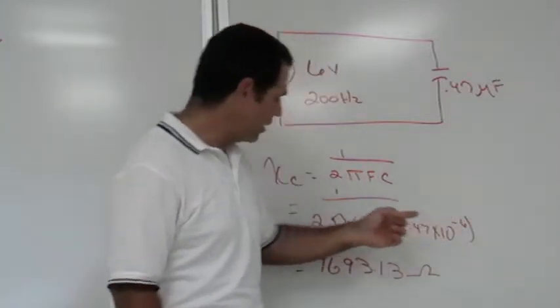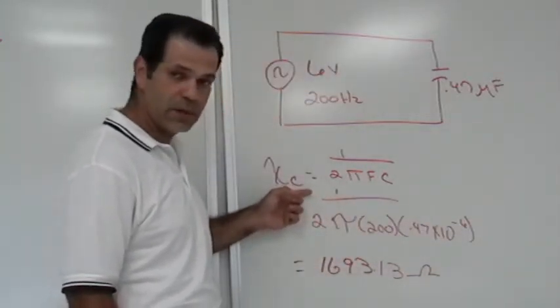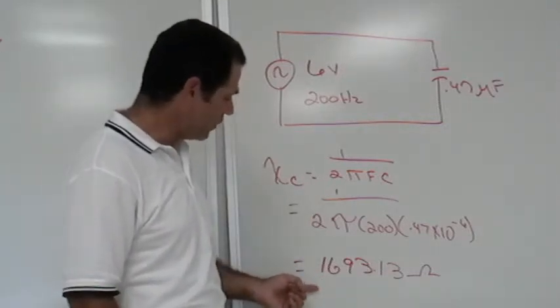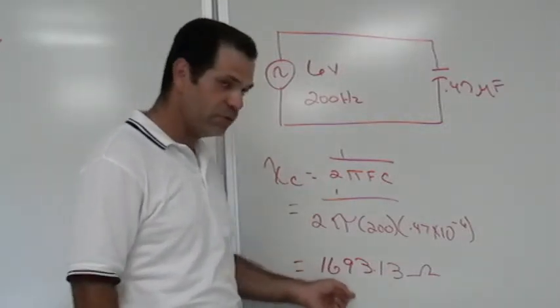Hit enter, and then we hit the X of 1 button, which is the reciprocal key, and we get the value of 1,693.13 ohms.